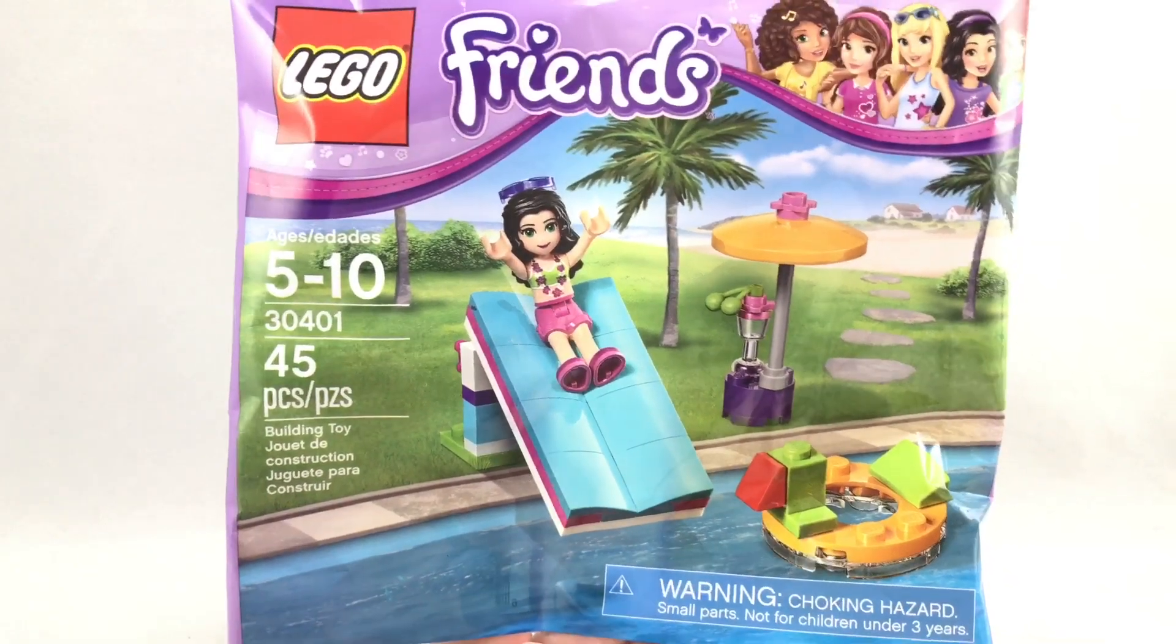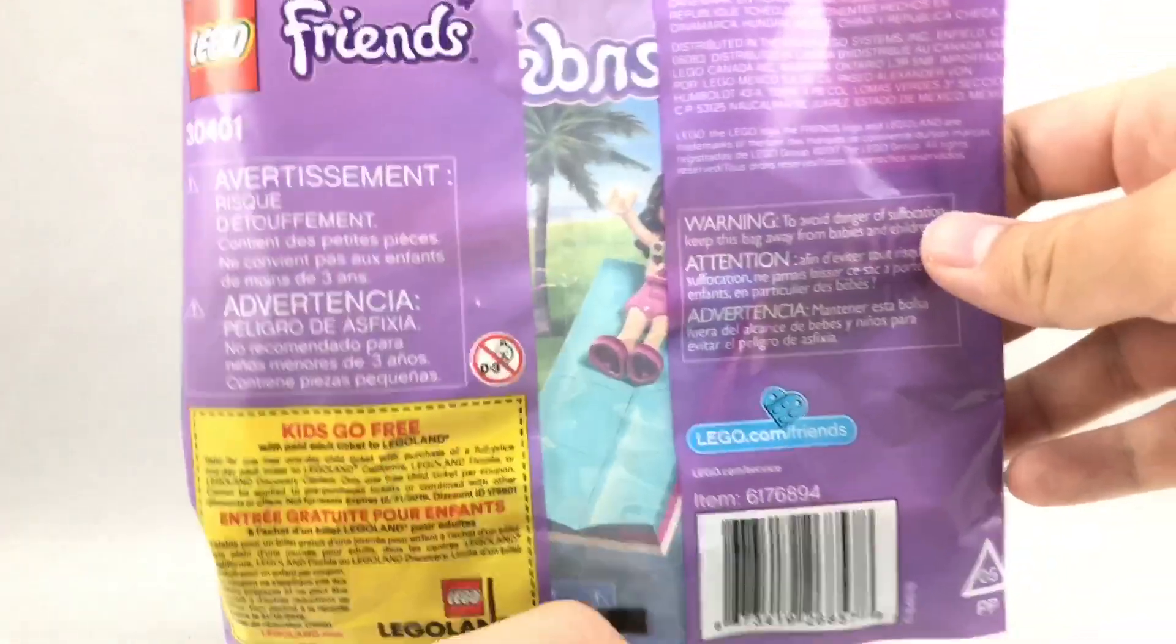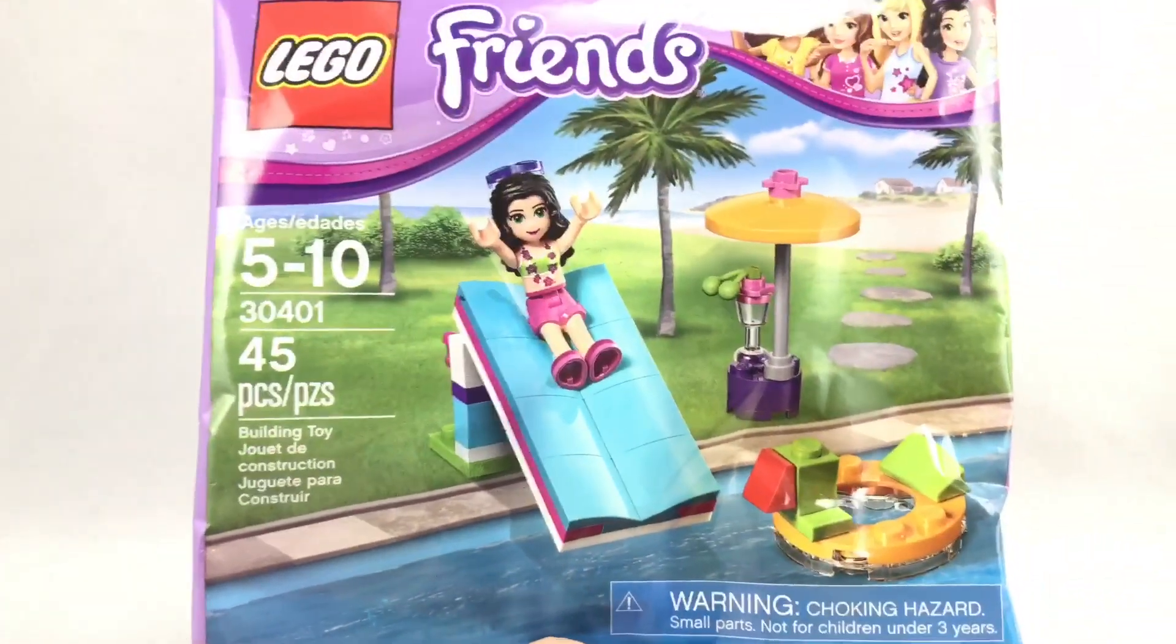Hello, Just2Good here. Today I'm reviewing the LEGO Friends Poolside Foam Slide. This retails for $4 at Targets across the United States and is a 2017 polybag with 45 pieces and one minifigure.